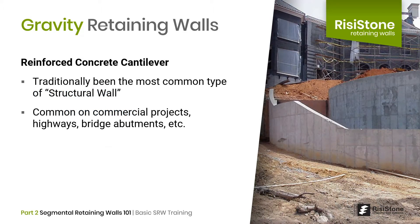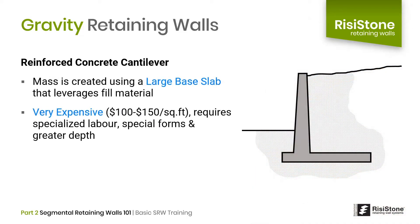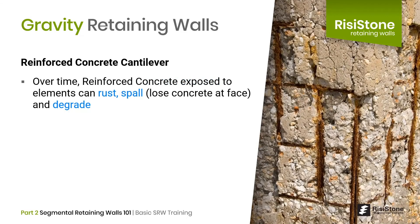Another type of retaining wall is called a cantilever wall, which uses a large base slab to act as a cantilevered mass against sliding and overturning. The cantilever wall has traditionally been the most common type of structural wall, used for decades on commercial projects, highways, bridge abutments, and so on. This type of wall is constructed using reinforced concrete and is relatively expensive due to the specialized forms, reinforcing steel, and specialized labor required. It can also be susceptible to corrosion over time and cracking, which is why many that are decades old need replacing.